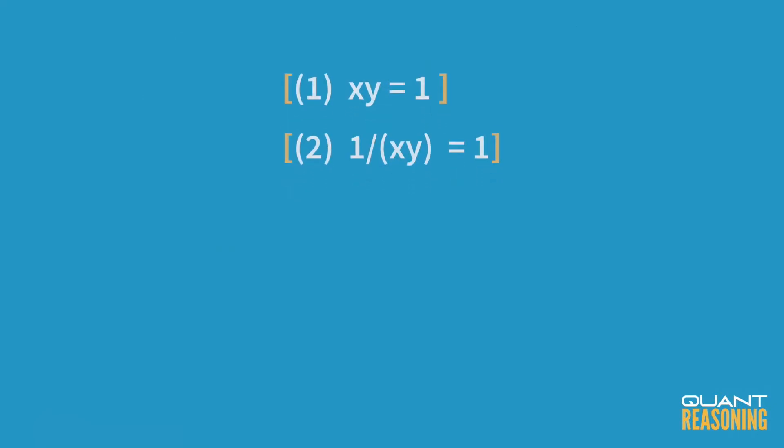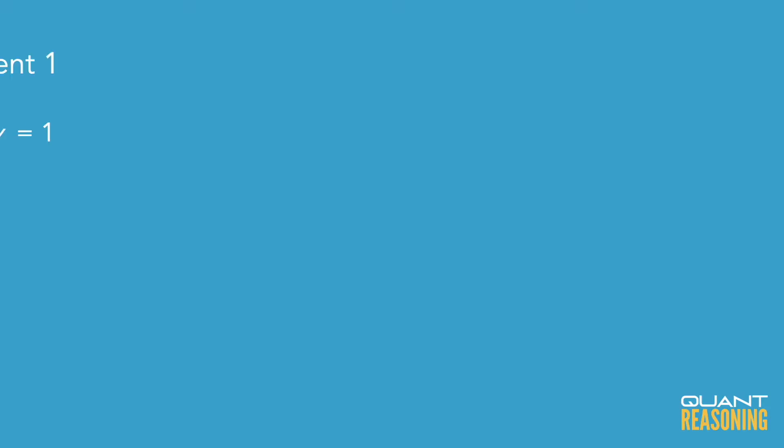Looking at the statements, it seems that they're kind of equivalent. I can infer statement two from statement one by dividing both sides by XY. And I know that I'm allowed to divide both sides by XY because XY is definitely not zero. How do I know that XY is not zero? Well, because statement one just told me that XY is one. So I can divide both sides by XY and I'll get statement two.